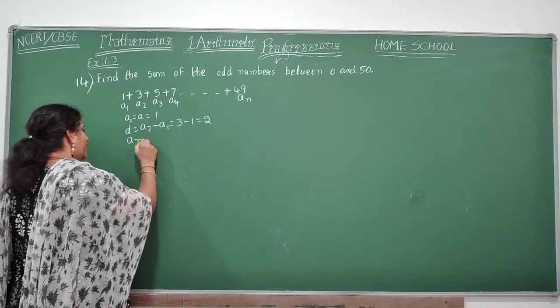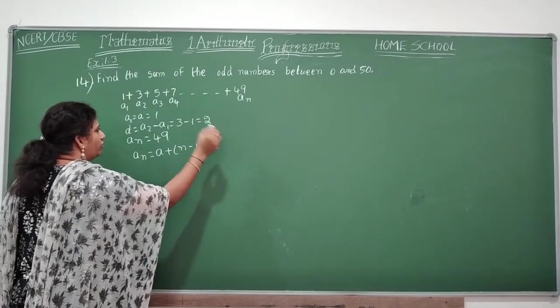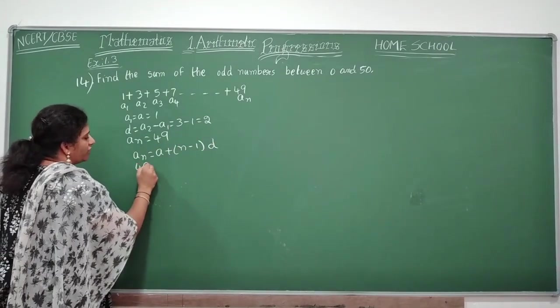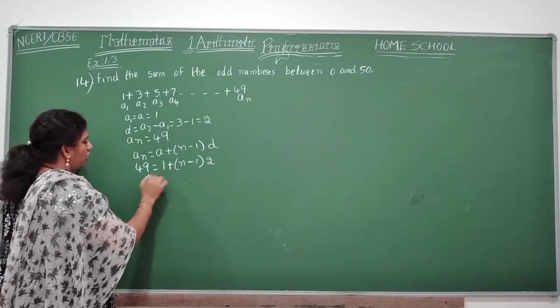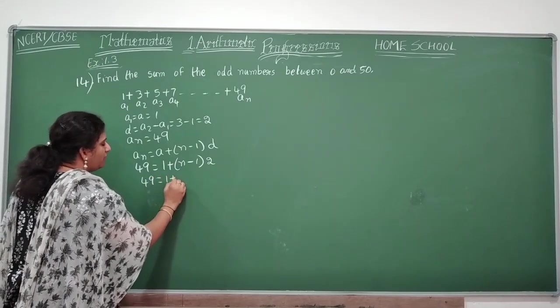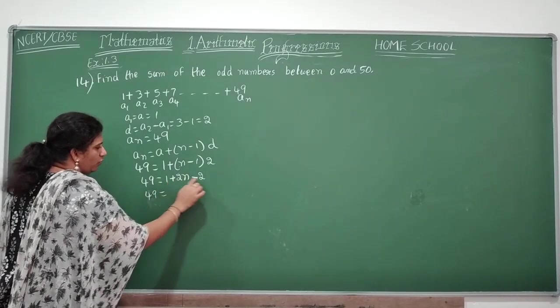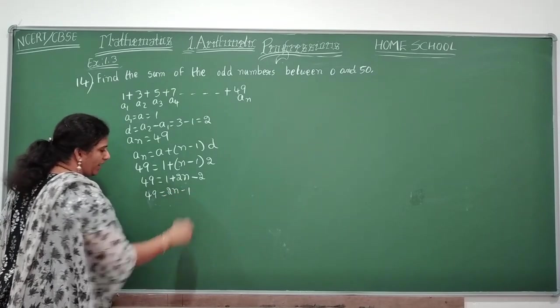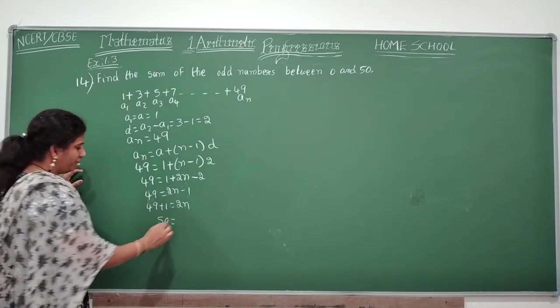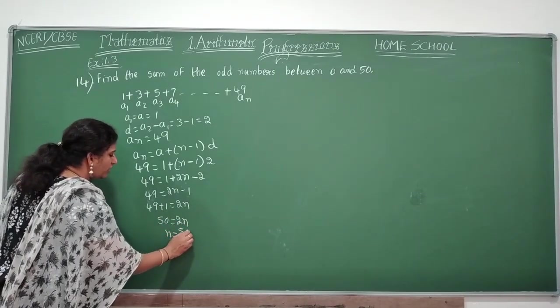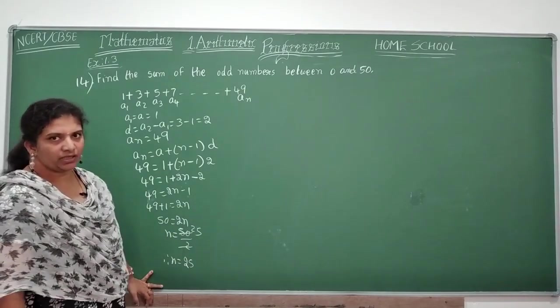Now given an is equal to 49. What is your an formula? an is equal to a plus n minus 1 into d. an value is how much? 49. a value is 1, and your n don't know, n minus 1, d value is 2. So 49 is equal to 1 plus 2 into n, 2n minus 2 into 1 minus 2. 49 is equal to 1 minus 2 will be how much? Minus 1. So minus 1 bring this side. 49 plus 1 is equal to 2n. 49 plus 1 will be 50, 50 is equal to 2n. n is equal to 50 by 2, that will be 25. Therefore n is equal to 25. Is the problem completed? No, not at all.